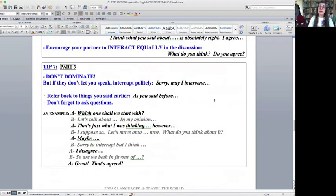So which one shall we start with? Well, let's talk about. In my opinion, that's just what I was thinking. However, I suppose so. Okay, let's move on to now. What do you think about it? Maybe, sorry to interrupt you, but I think I disagree. So we're both in favor of? Yes, great, that's agreed. So tip seven is how to practically share the conversation, so that you discuss each of the five points and come to some common agreement on what you think is a good way of communicating.